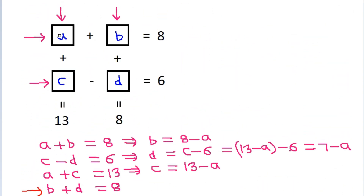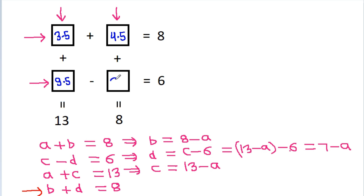So, A is 3.5, B is 4.5, C is 9.5, and D is 3.5.